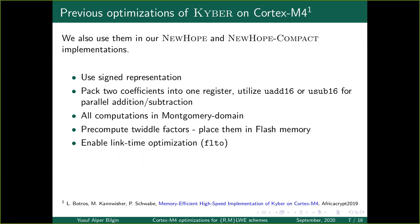Moreover, we implement a double butterfly, which takes a packed register as input and returns a packed butterfly result. We perform all computations in Montgomery domain since it yields a fast Montgomery reduction, specifically after multiplication. We pre-compute all twiddle factors in the Montgomery domain and store them in flash memory, reordered so they appear in memory in the same order as they are used during computation. Hence, we can easily load the next one without computing its address. The load instruction on Cortex-M4 can move the pointer to the next twiddle factor while fetching the current value, so moving to the next factor has no extra cost. We also enable link-time optimization (LTO), which can give a performance boost.